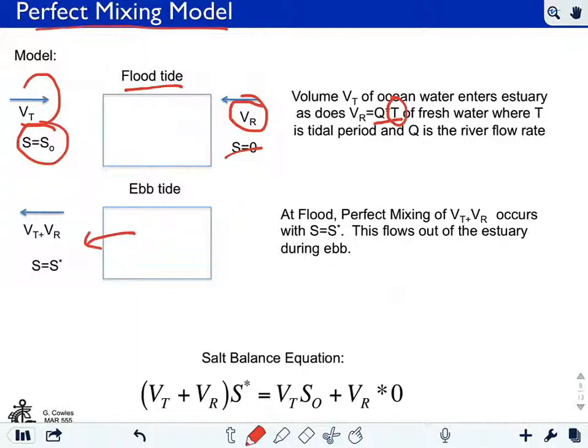They mix together perfectly right at the end of that flood tide, and then on ebb everything ebbs out. So you have river discharge coming in on flood and water from the open ocean coming in on flood with a high salinity. They mix together perfectly, and then it's all exported during ebb. Again, this is a simple model of an estuary.